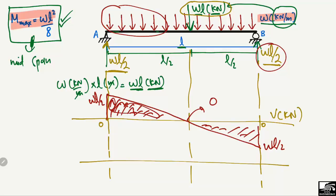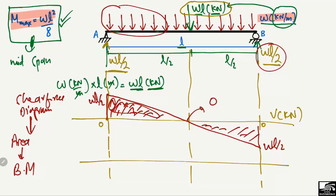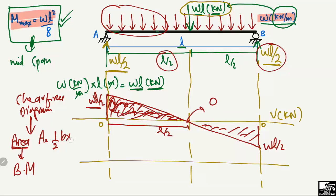To find the bending moment, we calculate the area of the shear force diagram, since the area of the shear force diagram gives the bending moment value. We find the area of the left triangle up to the midpoint: the height is wL/2 and the base is L/2. So the area = ½ × base × height = ½ × (L/2) × (wL/2), which gives wL²/8.